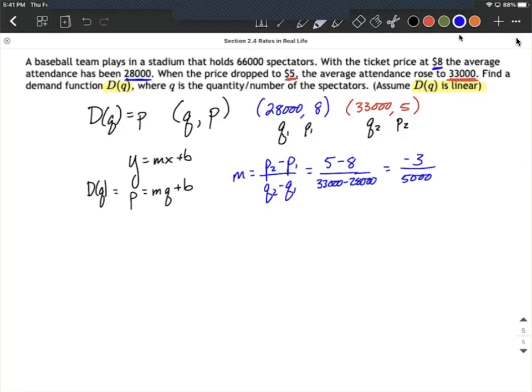So we can input that in over here. We have P equals negative 3 over 5,000 times Q plus B. And what I'm going to do is go ahead and just use this Y equals MX plus B, the slope intercept format, instead of pulling out the point slope form.